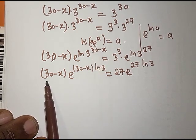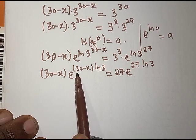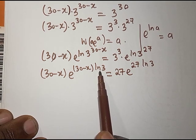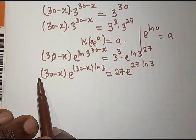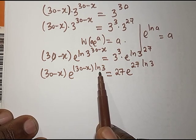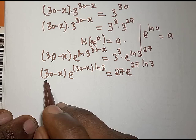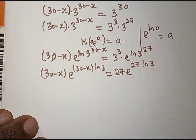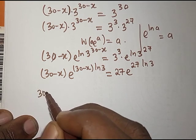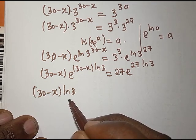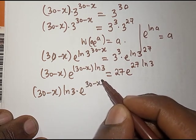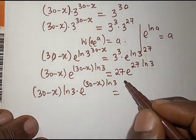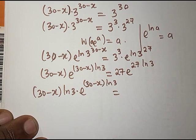Looking at this expression, the coefficient of e on the left is (30 − x), but the power contains ln 3. We need ln 3 in the coefficient too so it matches the Lambert form. So we multiply both sides by ln 3, giving (30 − x) · ln 3 · e^((30 − x) · ln 3).